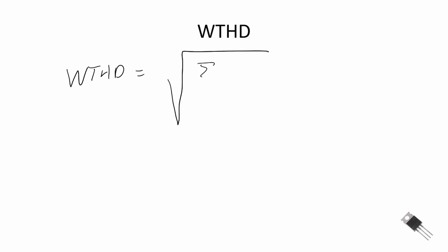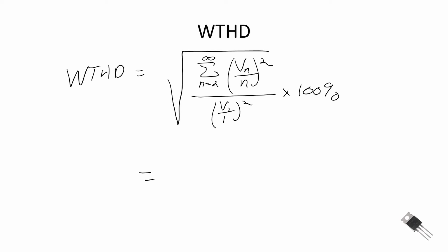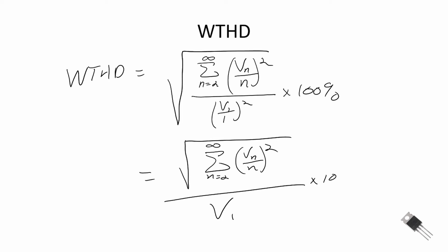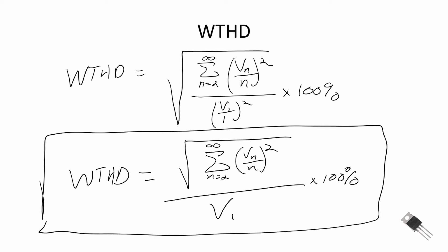This results in the weighted total harmonic distortion being equal to the square root of the summation from n equal to 2 to infinity of (Vn/n)² divided by (V₁/1)², times 100%. This is also equal to the square root of the summation from n equal to 2 to infinity of (Vn/n)² divided by V₁², times 100%. That is the weighted total harmonic distortion — weighted by the factor of n, where n is 2, 3, 4, 5, and so on. This assumes an inductive load and accounts for the line current through it.